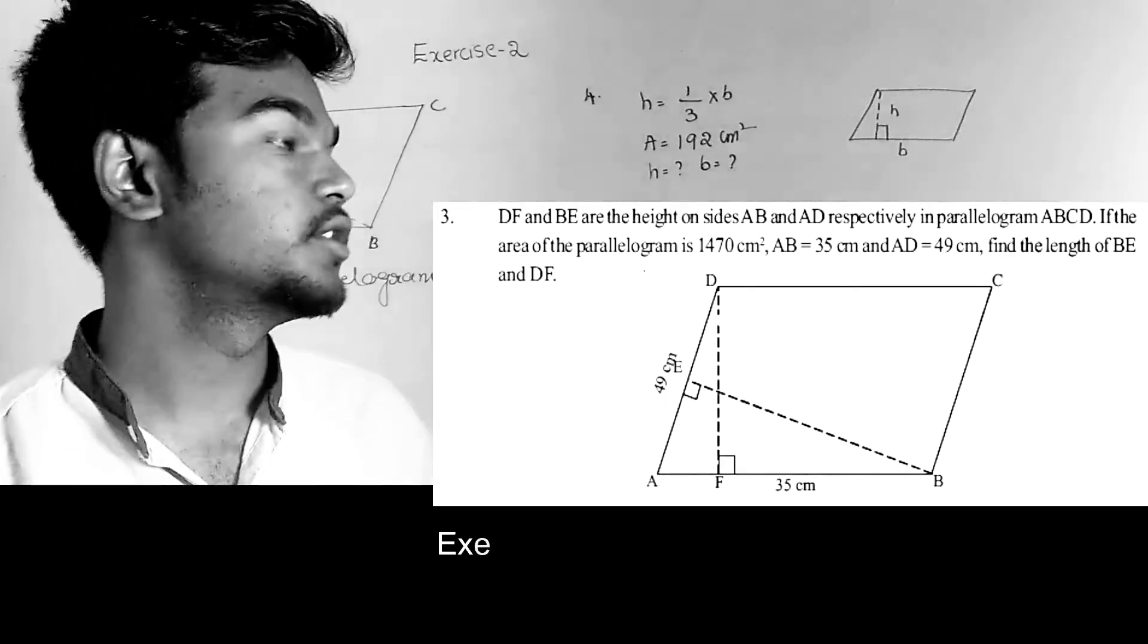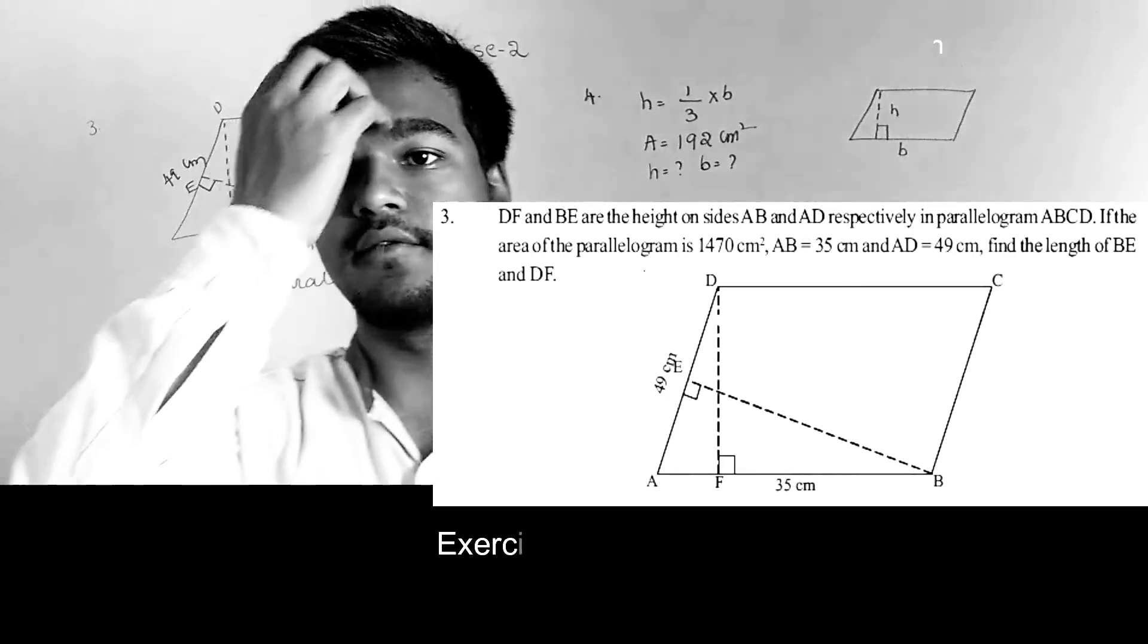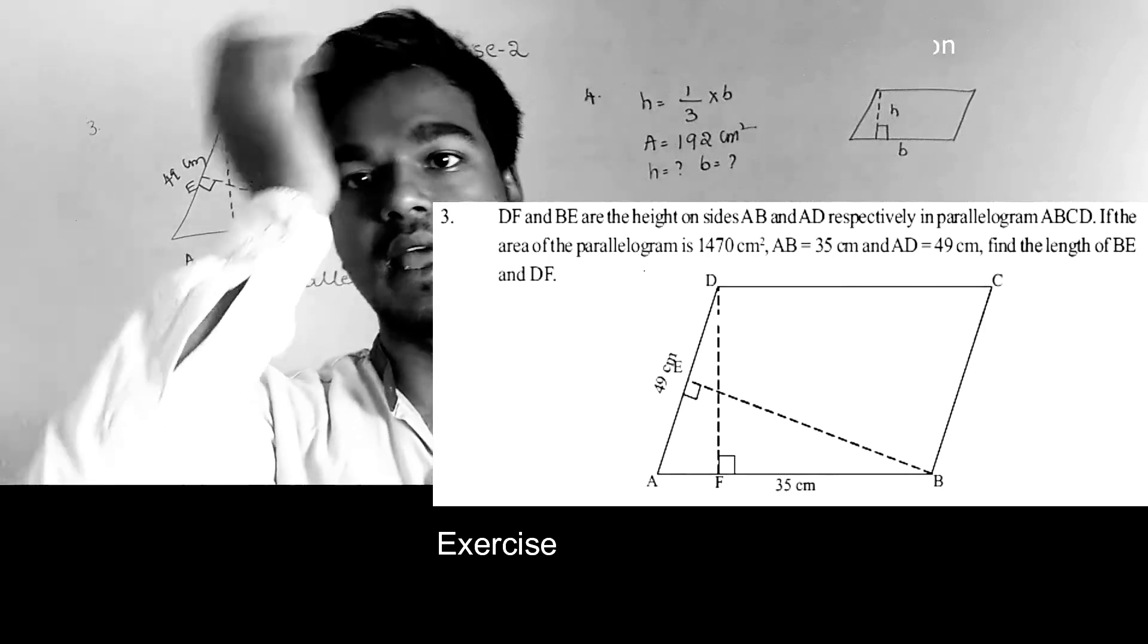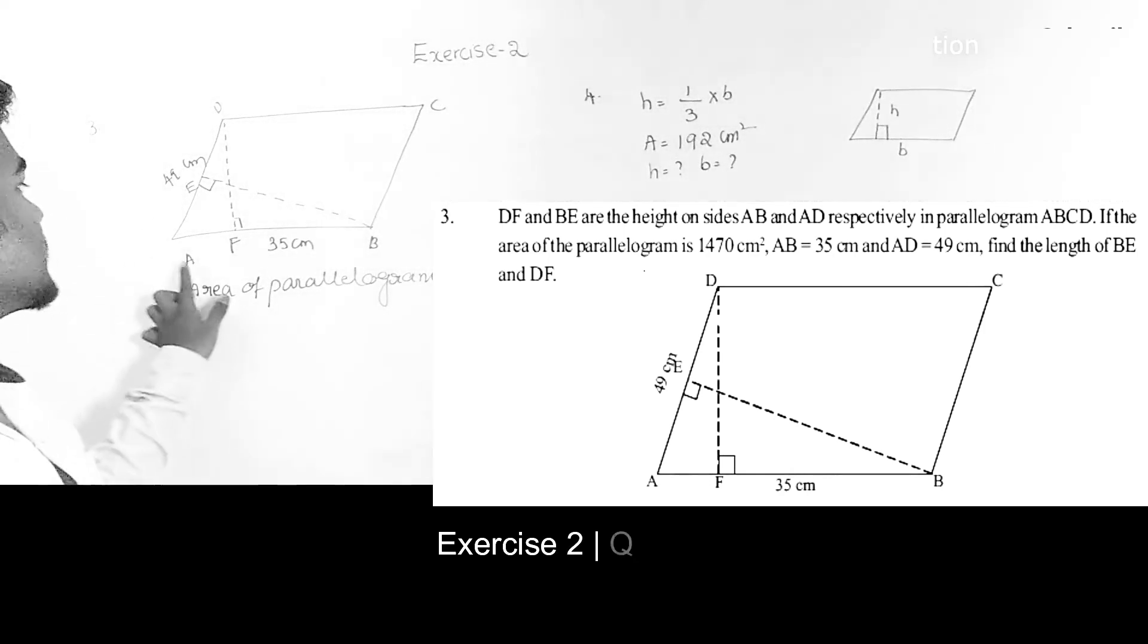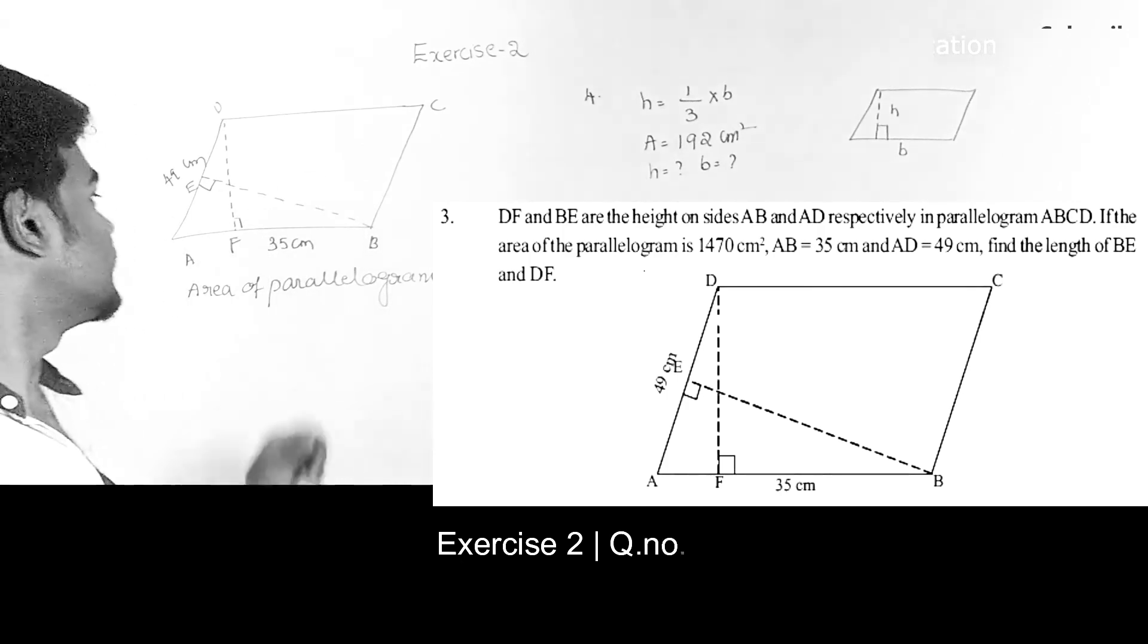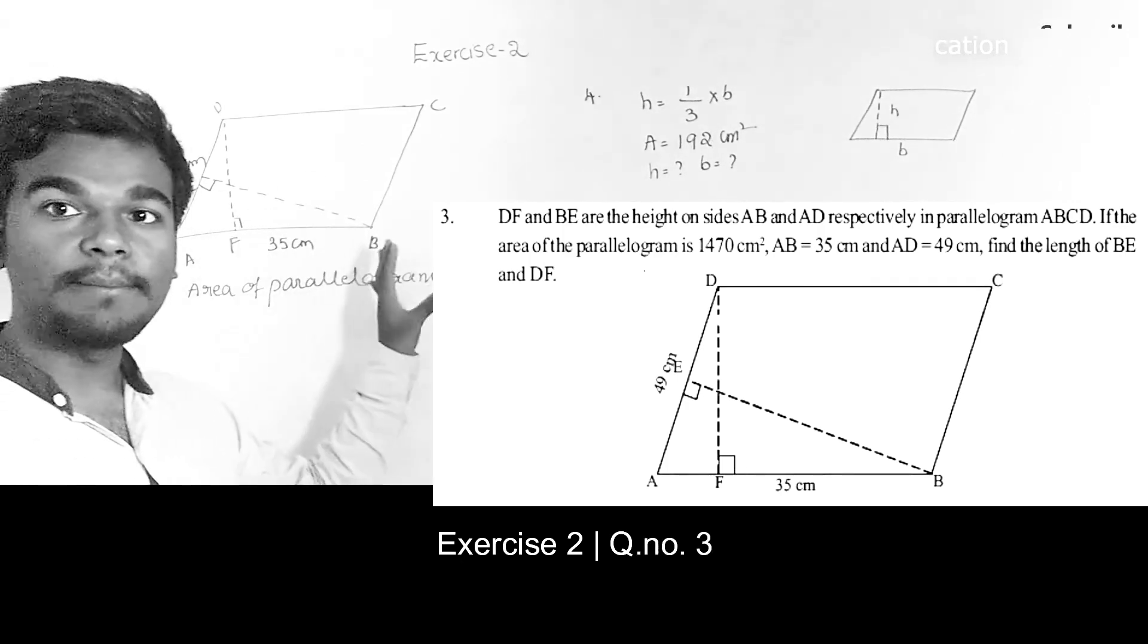In this module we are going to discuss the solutions for the third and fourth questions. Here the problem is ABCD is a parallelogram, then AB is one base with perpendicular height DF.